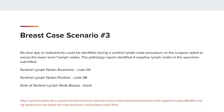Breast case example 3 discusses the scenario when Sentinel Lymph Nodes fail to map with lymph node dissection at the same time. No blue dye or radioactivity could be identified during a Sentinel Lymph Node procedure, so the surgeon opted to excise those lower level 1 lymph nodes. The pathology report identified 4 negative lymph nodes in the specimen submitted. Sentinel Lymph Nodes examined, code 00. Sentinel Lymph Nodes positive, code 98. Date of Sentinel Lymph Node biopsy is blank. The scope of Regional Lymph Node surgery field would be coded to 6. The date of Regional Lymph Node dissection would be coded to the date of the excision of lower level 1 lymph nodes.